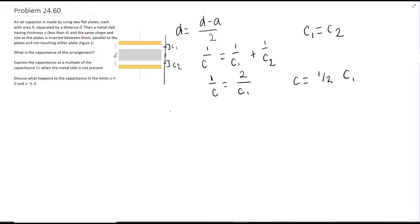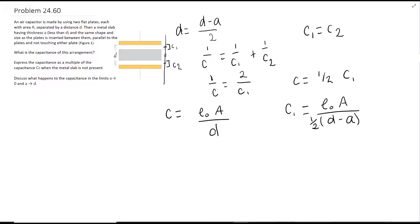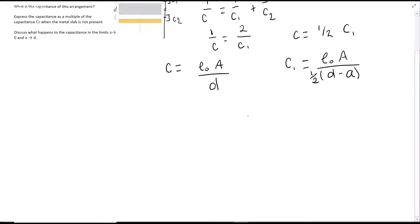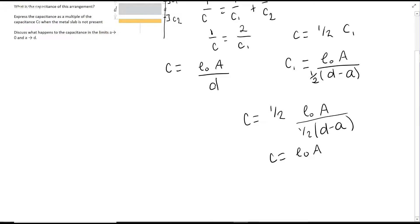Now we use the general capacitor equation: C equals ε₀A over d. We have our new distance, so C1 equals ε₀A over (d minus a)/2. But C is actually one-half of C1, so C equals one-half times that. The one-half factors cancel out, and we get C equals ε₀A over (d minus a). That is your answer for the first part — the capacitance of this arrangement.